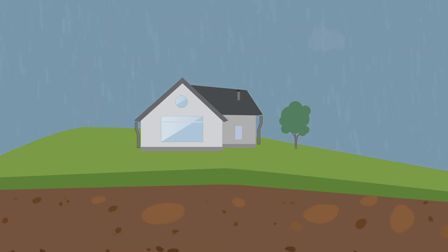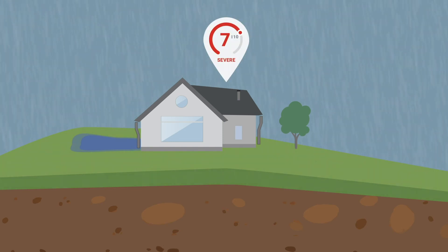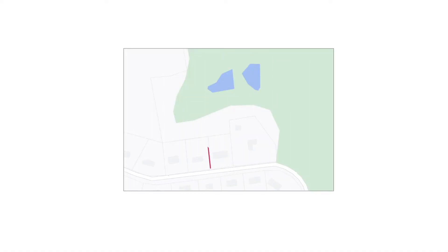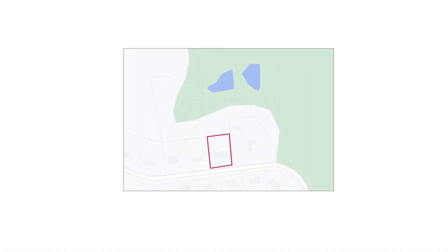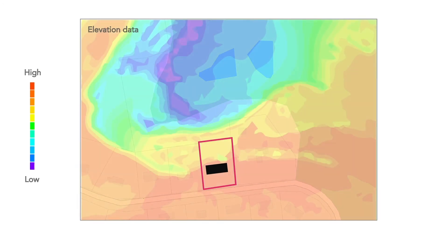Even a property located high atop a hill could have a relatively high flood factor if it's in an area where heavy rain events are expected to become worse and more frequent over the next three decades. The model includes publicly available and third-party data to identify property boundaries and the building footprint, which is then used along with elevation data to determine the likelihood of water reaching the lowest point of the home's footprint.